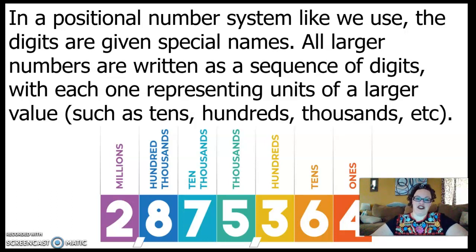A little bit of background information. In a positional number system like we currently use in the United States and the world we live in today, the digits are given special names. All larger numbers are written in a sequence of digits, with each one representing units of a larger value. So we have the ones digit, we have the tens digit, the hundreds, and each one getting larger. We know if we have three digits in a row, that's some hundred numbers. If we have six digits in a row, it's hundreds of thousands of numbers. If we have seven digits, it's millions. Right? So in our number system, it's a positional number system, each place has its own value. I know that you know place value.